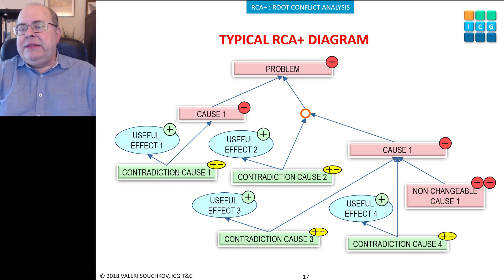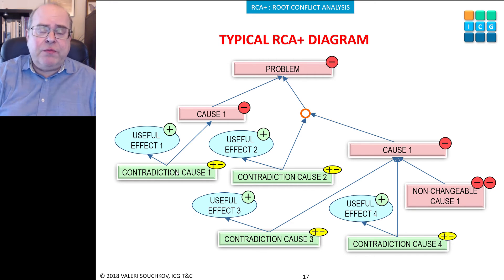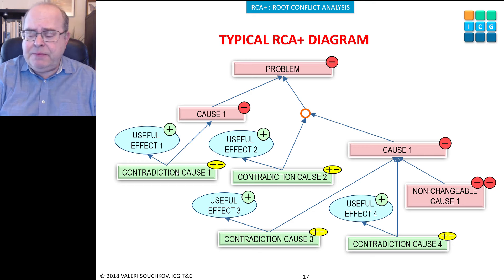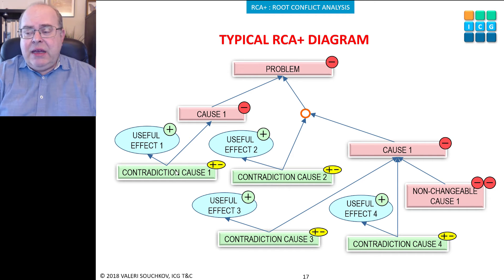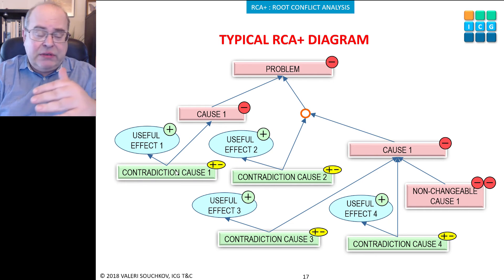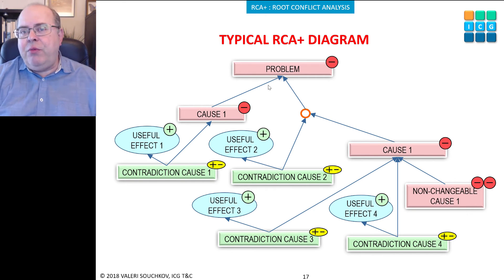Why do we stop when we find a contradiction cause? Searching in depth helps move toward more fundamental causes, but if we want to deal with fundamental causes, it's rather difficult as it requires more fundamental changes. It is known that the closer you are to the problem, the more effective and efficient the solution will be. The closer your contradiction is to the problem, the more ideal the solution will be.